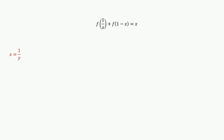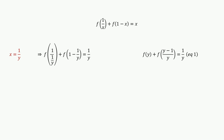If x equals 1 over y, then we have f of 1 over (1 over y) plus f of 1 minus 1 over y equals 1 over y. Simplifying this, we get f of y plus f of (y minus 1) over y equals 1 over y.